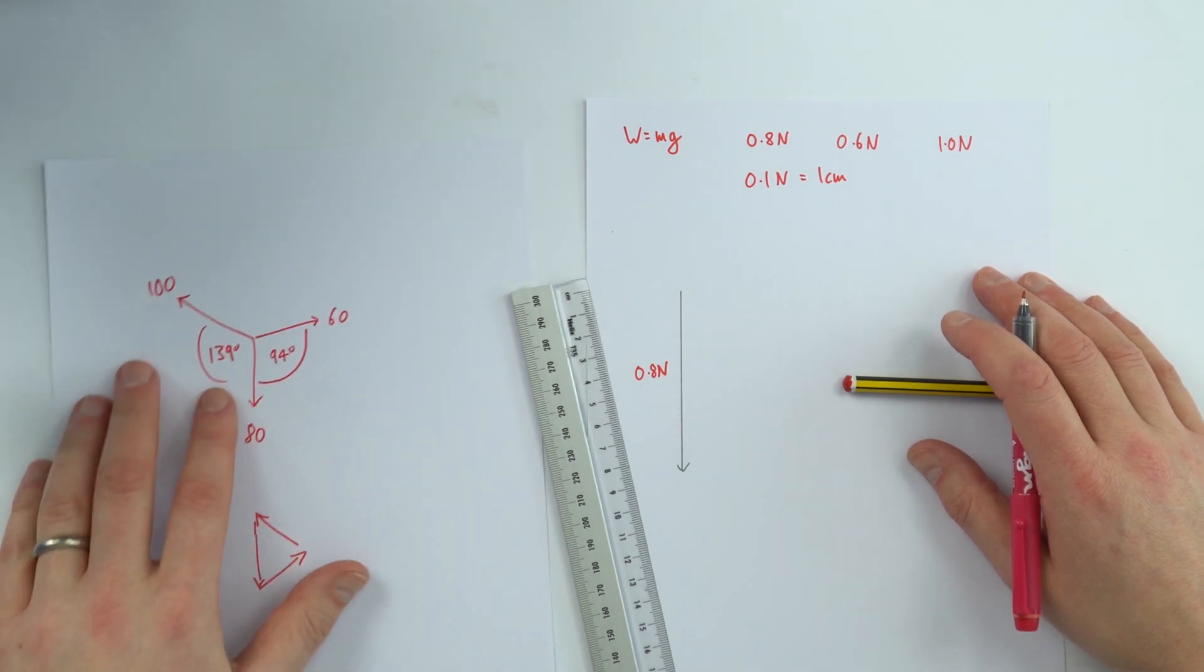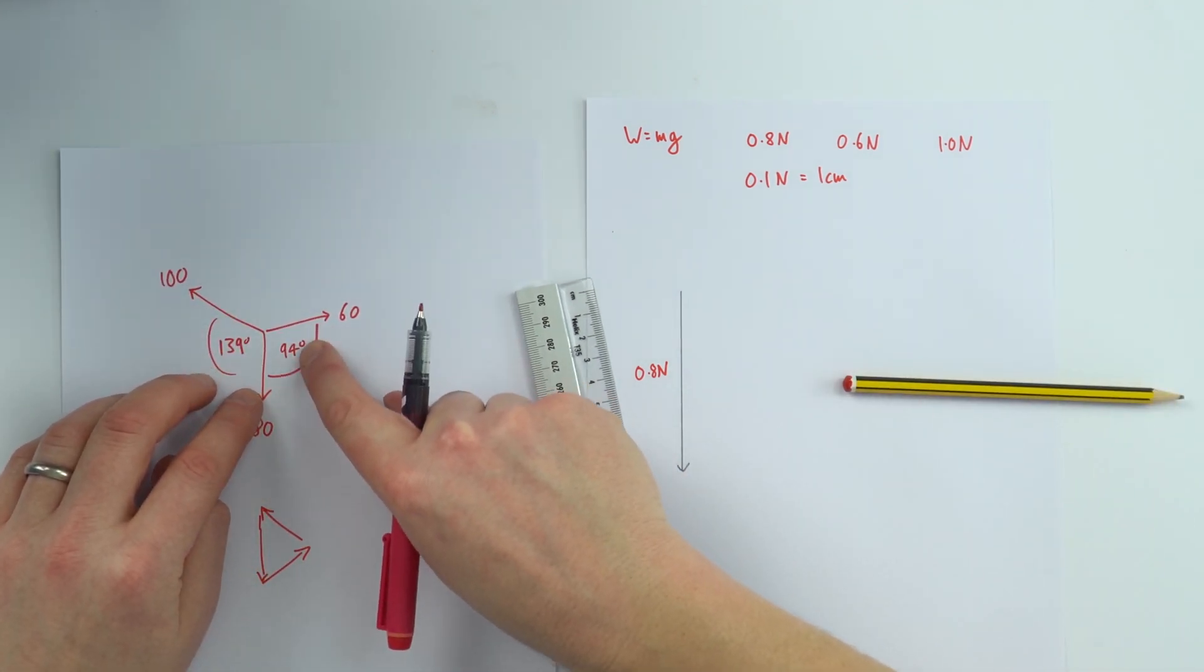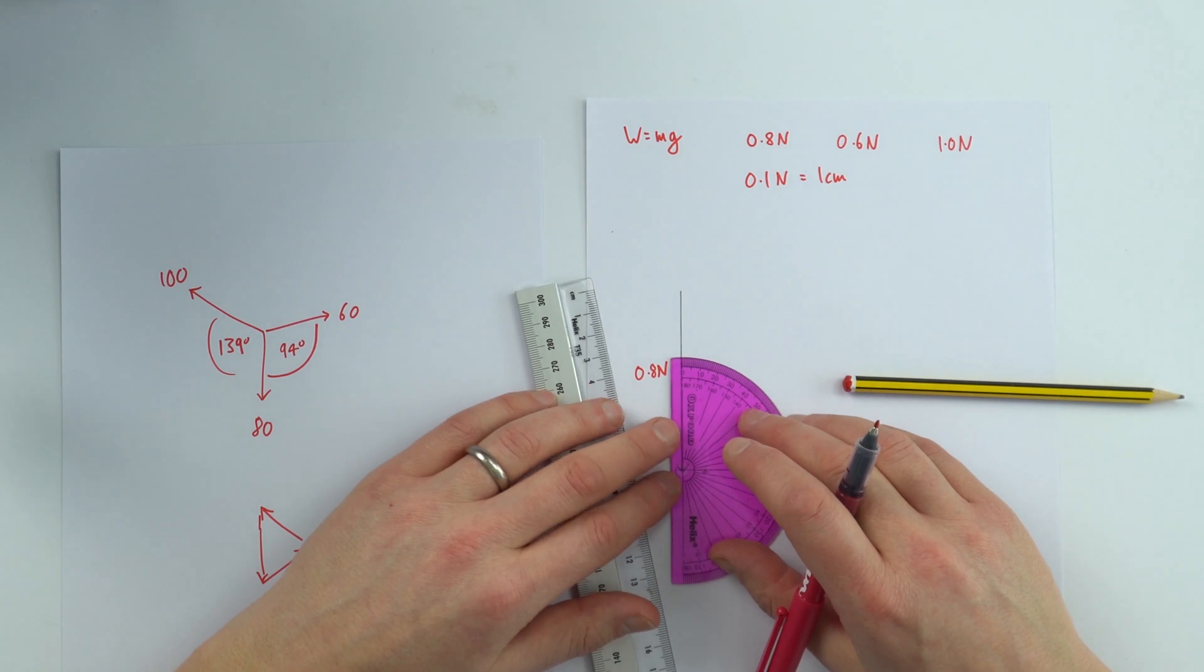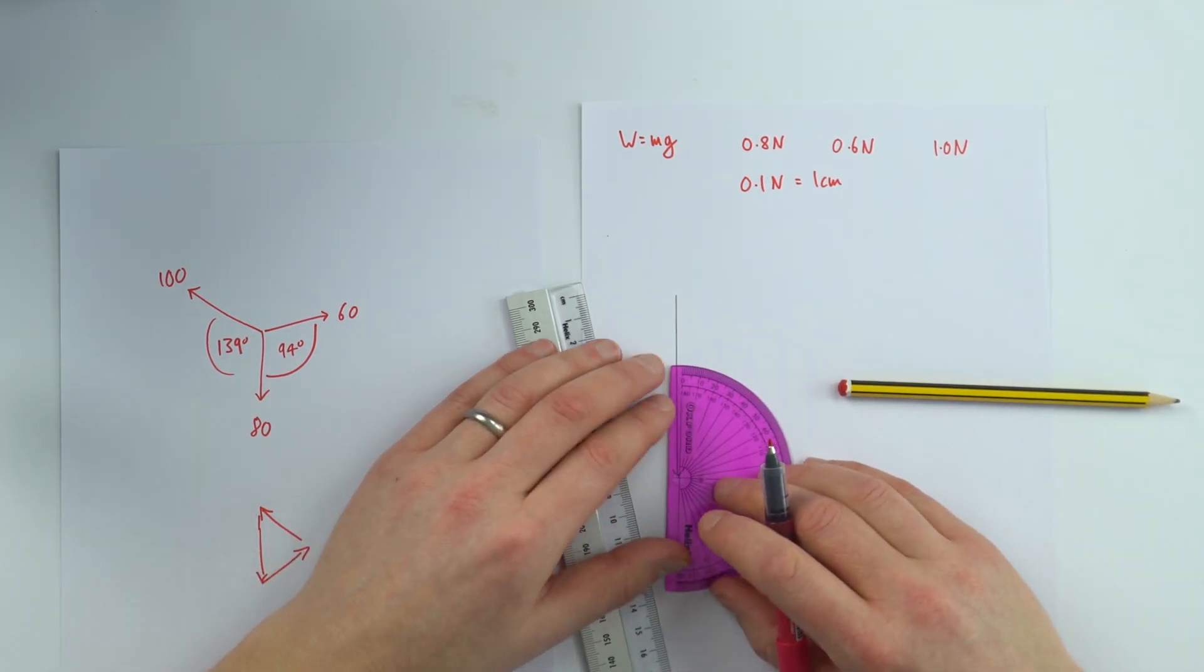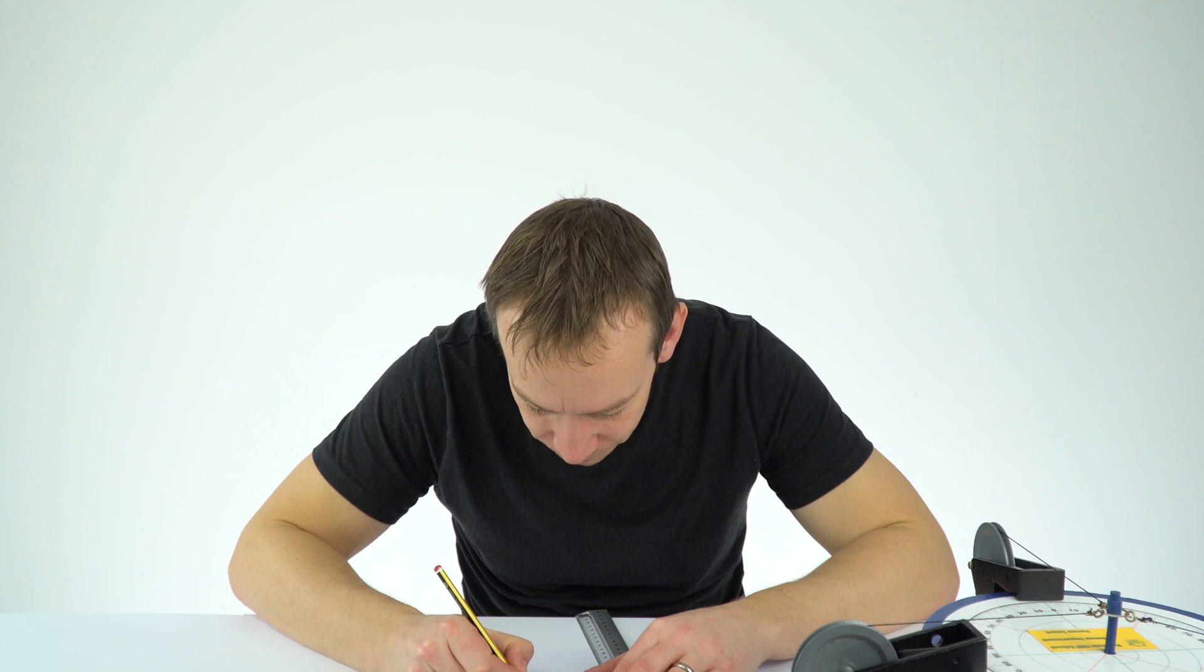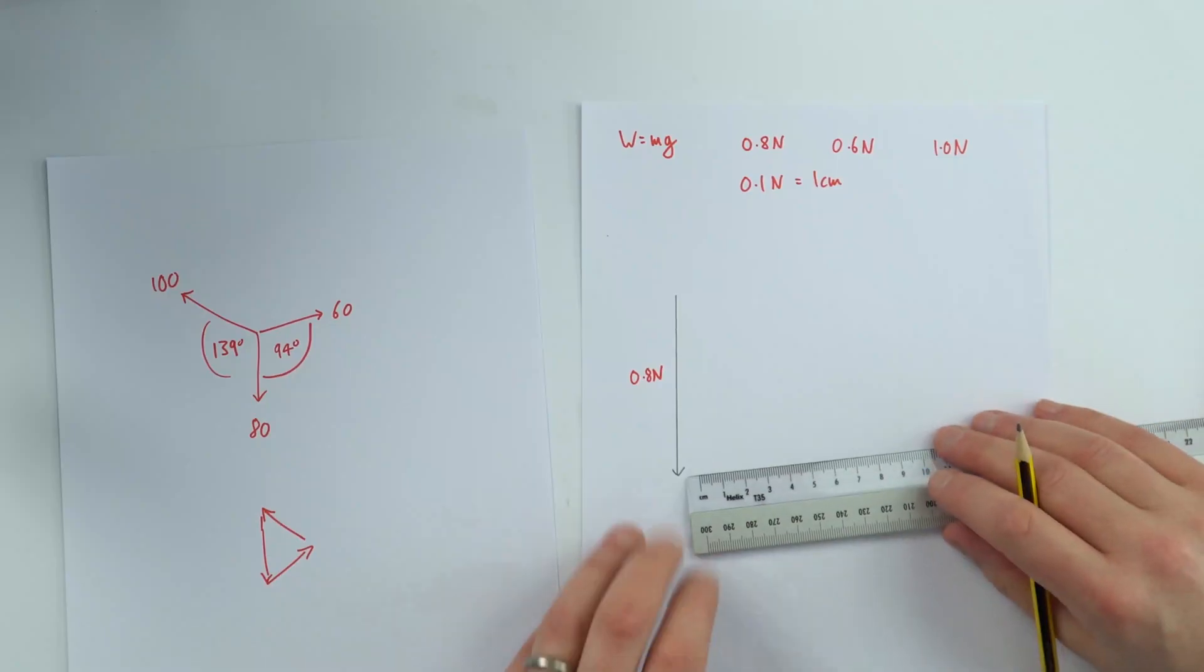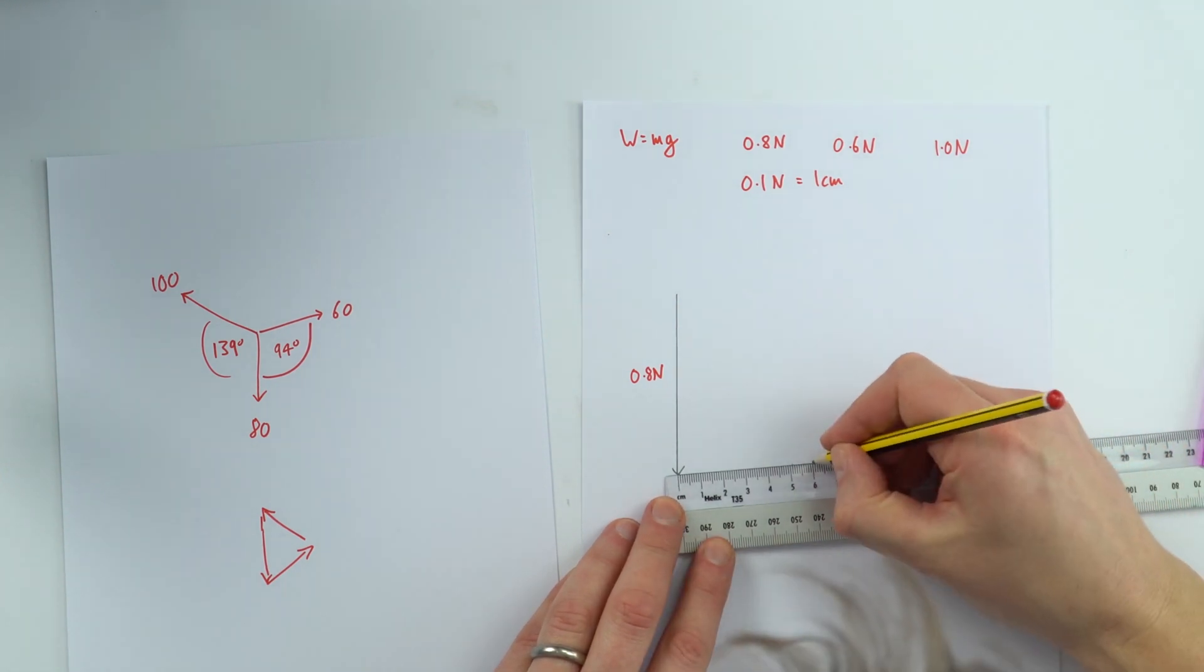Now the force to the right is going to be 6 centimeters long and there's an angle here equal to 94 degrees. So that means if I use my protractor effectively from this angle down here up to here should be 94 degrees. Going the other way that should be equal to 86. I've got a dot there and I'm going to draw this along which is going to go along 6 centimeters.